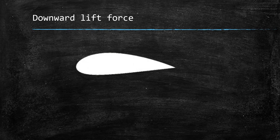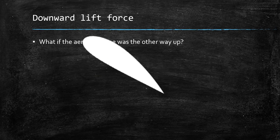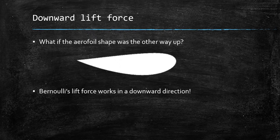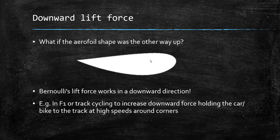What about a downward lift force? If the aerofoil shape is the other way around, Bernoulli's lift force will work in a downward direction — the principle remains the same, just reversed. Your airflow would be going slower over the top, therefore having higher pressure, and travelling faster underneath with lower pressure, creating a downward force. This is used loads in Formula One and track cycling to increase the downward force holding the car and the bike to the track at high speeds around corners.